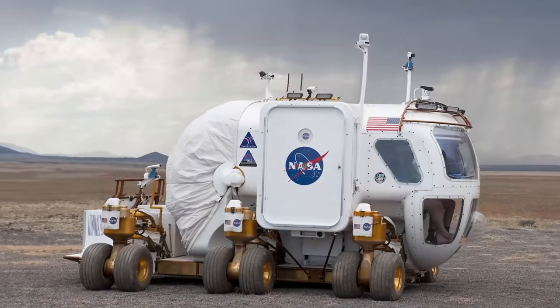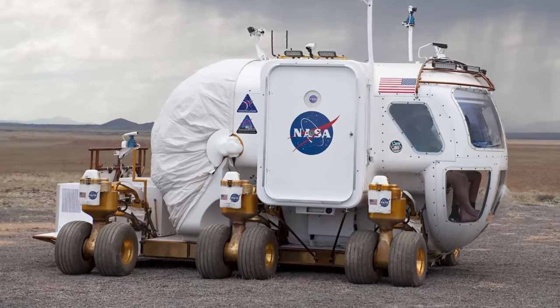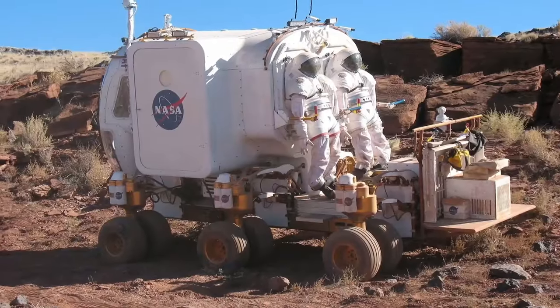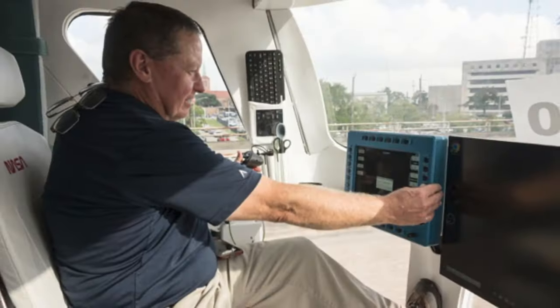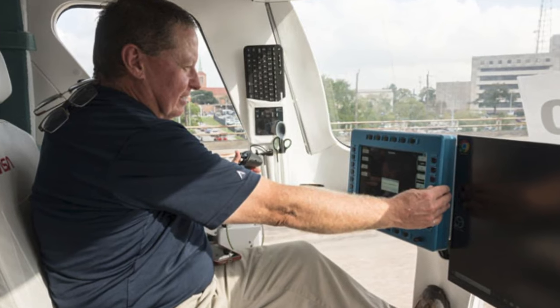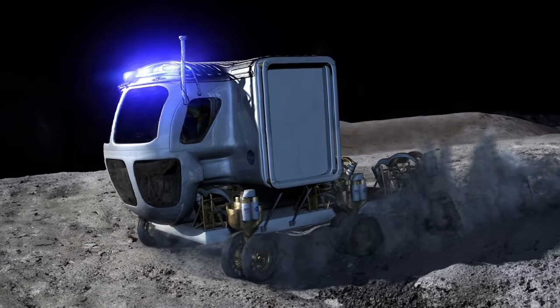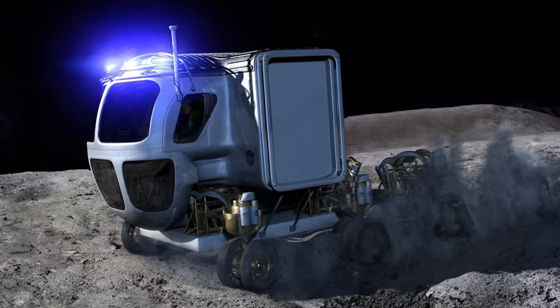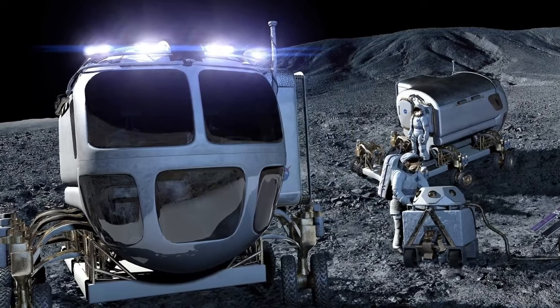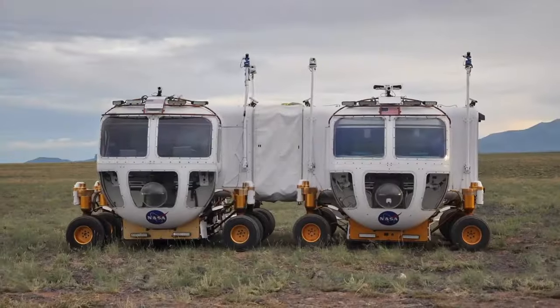That's where NASA's RV-like concept, known as the Habitable Mobility Platform, comes into play. If this project succeeds, the RV will have a pressurized interior and life support systems, meaning passengers will be able to have a ride without their spacesuits on. This will definitely make life easier for astronauts. The final design of the vehicle isn't ready yet, but the main goal is to allow several people to live and work inside the vehicle for up to two weeks.